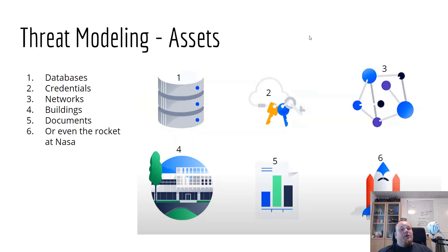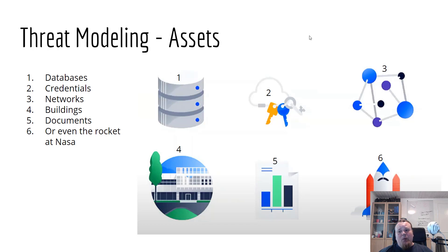Let's start by talking about assets. Assets could be things like databases, credentials, networks, buildings, documents, or even a rocket at NASA. When you create a threat model, there's a good chance you'll actually need to use some graphics, because visuals explain things better than text. I'll show you some ways to do that at a later stage in this video.